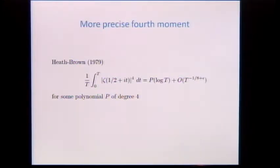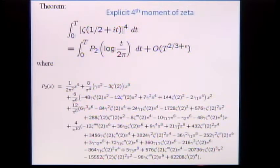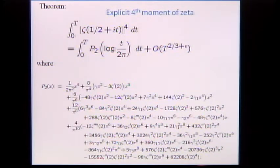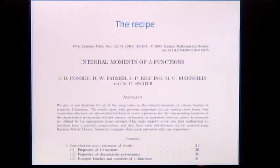Heath Brown had done something with the fourth moment of zeta in 1979, giving a fourth-degree polynomial with a power savings. At some point I decided to calculate exactly what that fourth-degree polynomial was — all the constants involve zeta at 2 or at 1 in the form of derivatives. But there's no way you'd be able to generalize that to a sixth moment — it's completely hopeless. But together with Farmer, Keating, Rubenstein, and Snaith, we figured out how to do this.